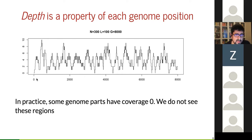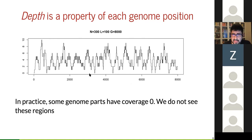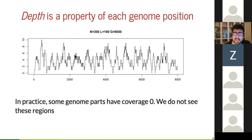In this example, the assembly will have seven contigs — those regions separated by zero-coverage gaps — even with 300 reads and a lot of data. It is very hard to see everything with shotgun sequencing because of its random nature.